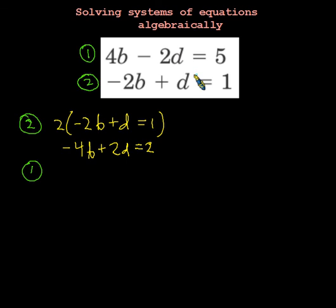Okay, so the top row we just leave. I'm just going to rewrite 4B minus 2D equals 5. Then we'll combine together by adding. Since I made negative 4B and positive 4B, I can add to eliminate.